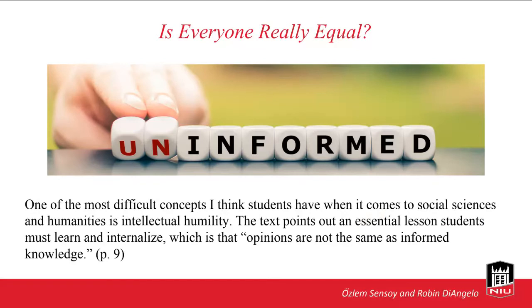One of the most difficult concepts for students in social sciences and humanities is intellectual humility. The text points out that opinions are not the same as informed knowledge — something I try to hit home with students in my composition classes. Critical thinking is not simply having different opinions; it results in an informed perspective after engaging with new evidence and accounting for multiple layers of complexity. Popular opinions tend to be superficial and anecdotal. For example, although someone might disagree that social injustice exists, to be credible they must root their argument in established knowledge and demonstrate how their opinion brings new evidence for consideration.